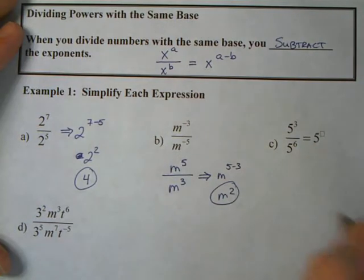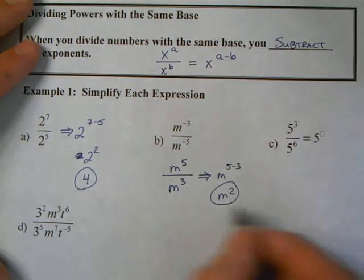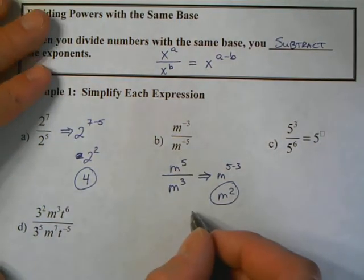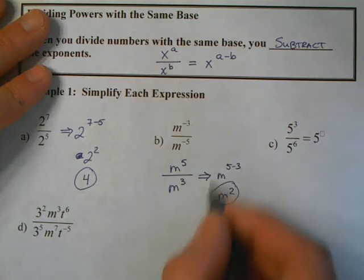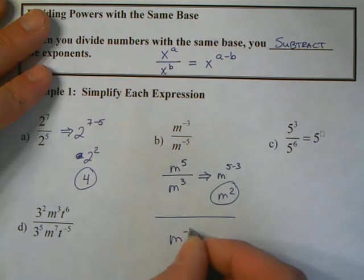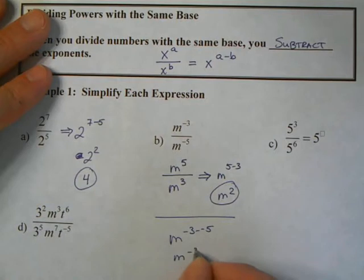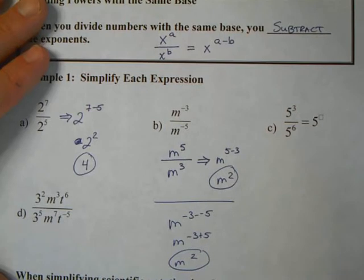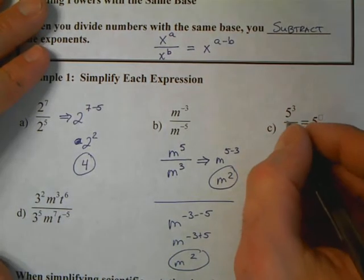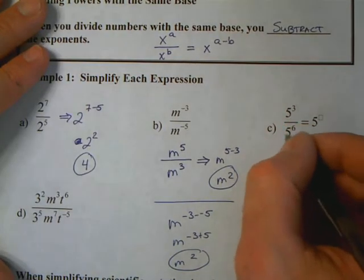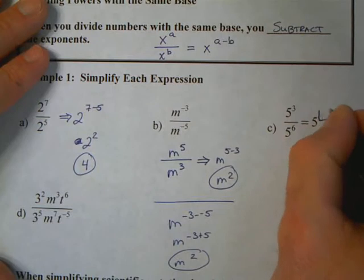Let's subtract our exponents. 5 minus 3? That's 2. So our answer is m squared. Could you have done this a different way? You sure could have. You could have said negative 3 minus negative 5, which is negative 3 plus 5, which is 2. Either method will get you the right answer.